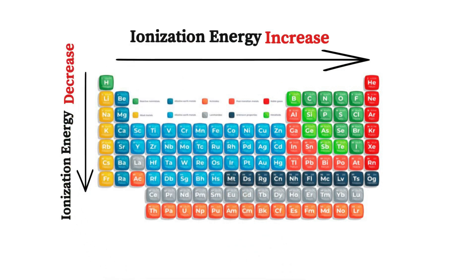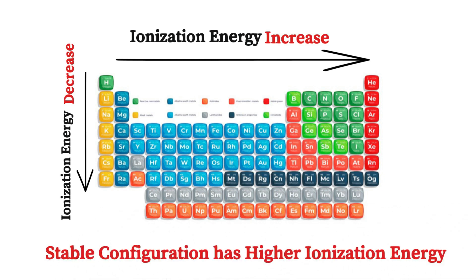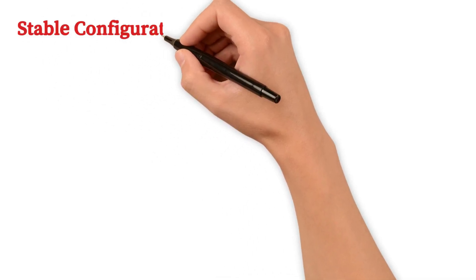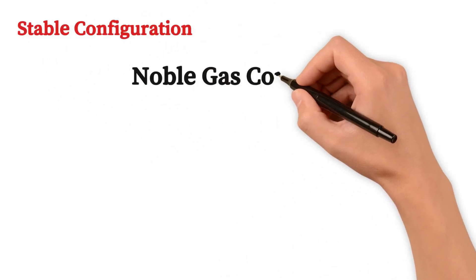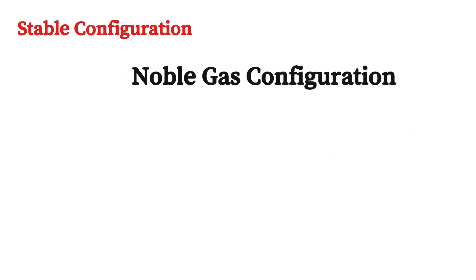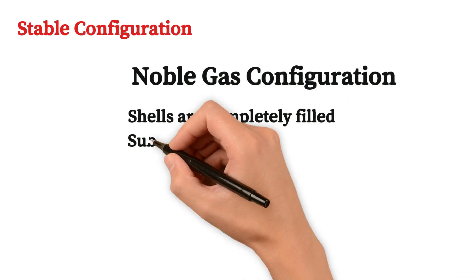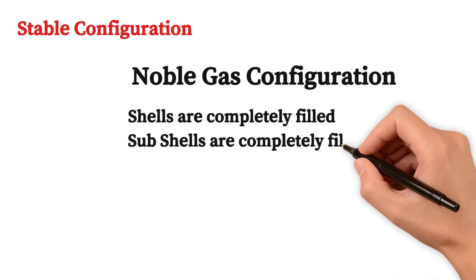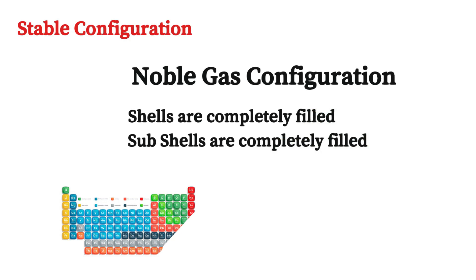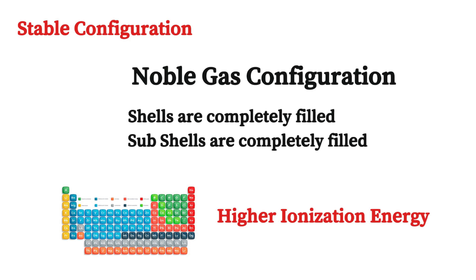So to summarize: going along the period ionization energy increases, and going down the group ionization energy decreases. Elements having a stable configuration — such as noble gas configuration, completely filled shells, or completely filled sub-shells — have higher ionization energy.